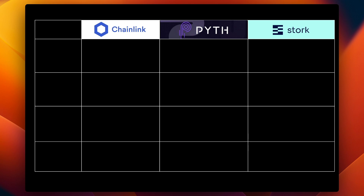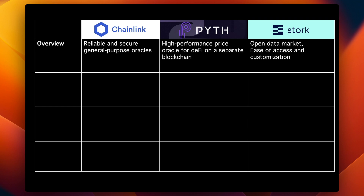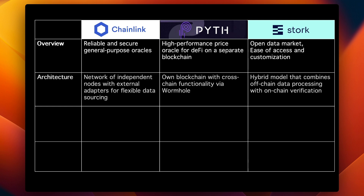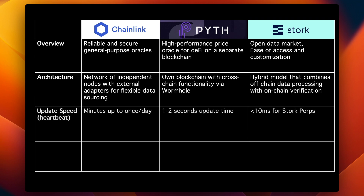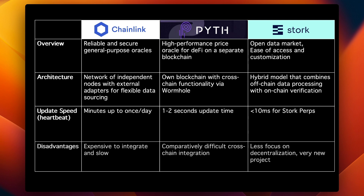Stork Perps places its main emphasis on speed with a sub-10-millisecond heartbeat, targeting perpetual DEXes and high-frequency trading on very fast chains. To summarize the comparison: Chainlink is a very established protocol offering reliability, a wide range of services, more general purpose use, and strong security. Pyth is high-performance with its own blockchain for increased decentralization. Stork is a very new concept — the open data market — with ultra-fast data delivery and customization as its main selling points.